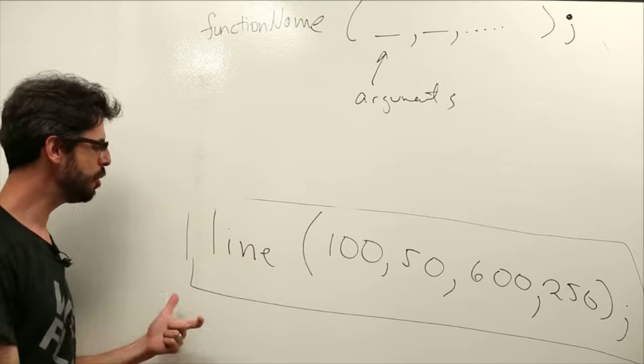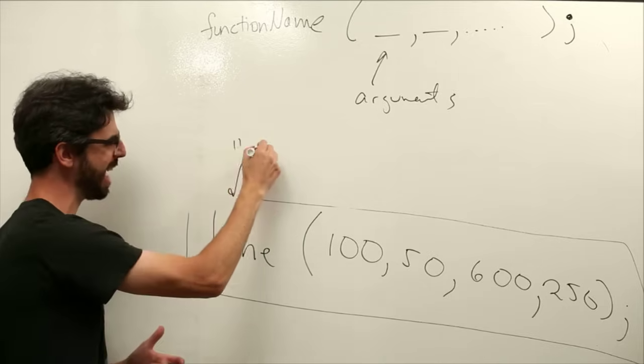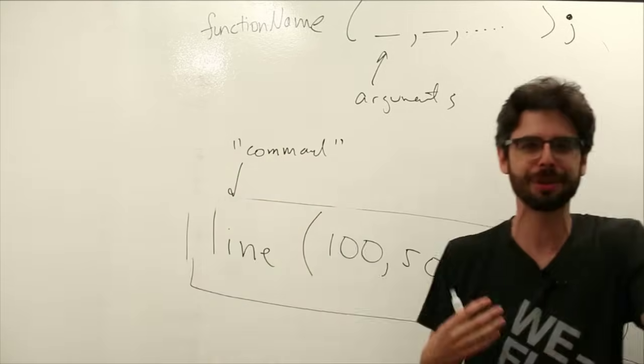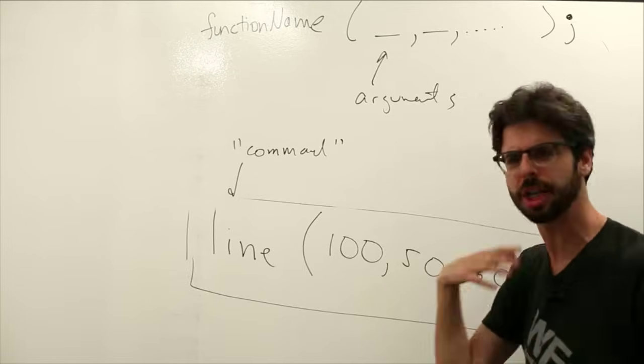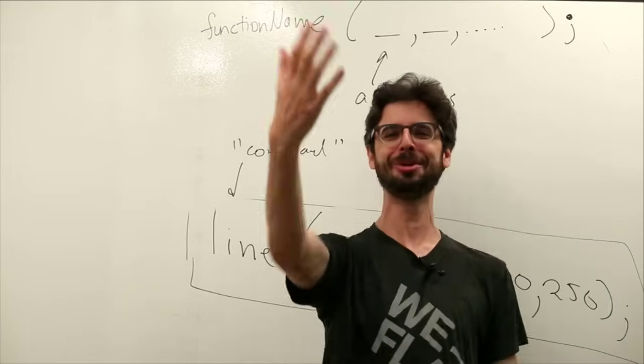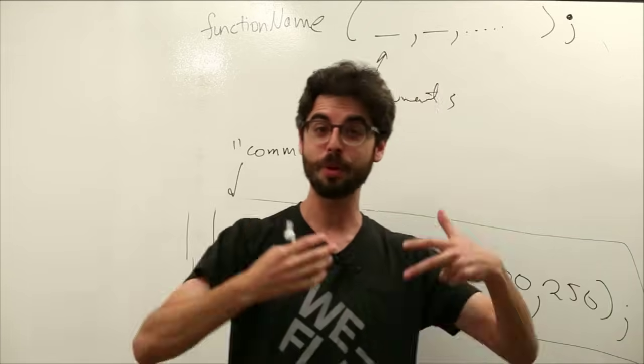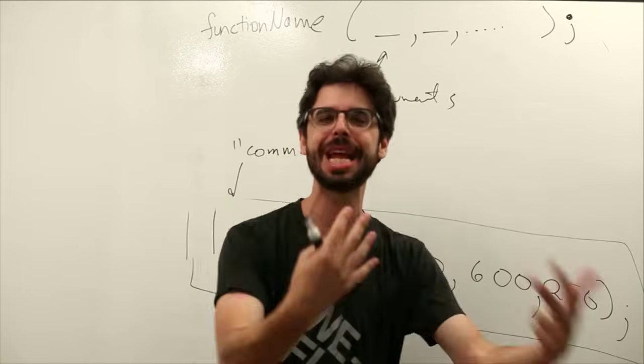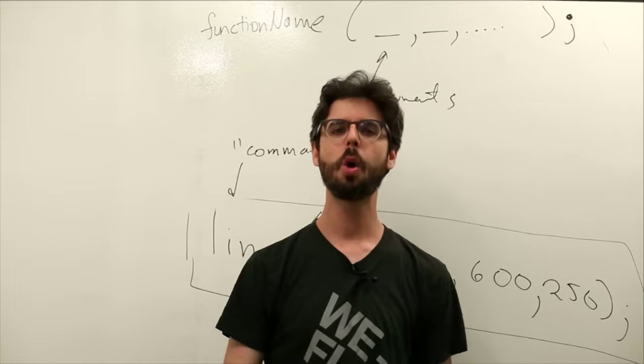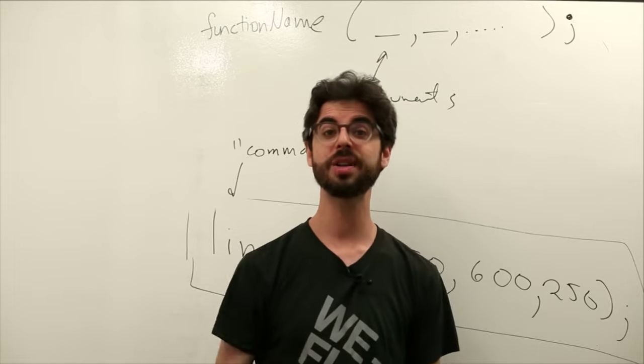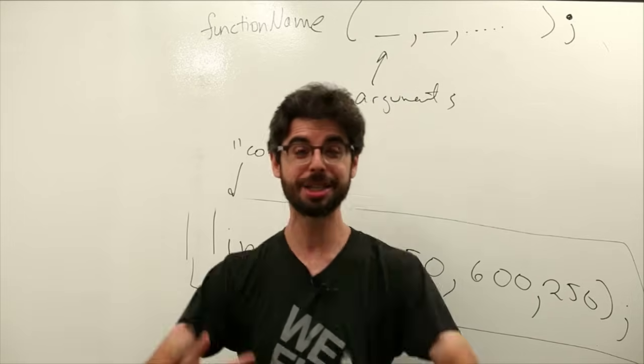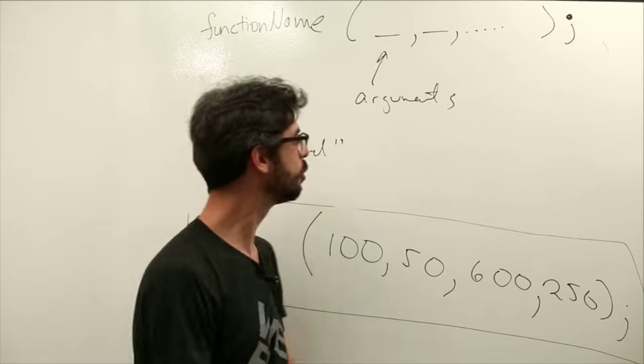What does this mean exactly? You can think of this as a command for now. Truly, it's a function or a method or a procedure. Function, I think, will be the word that we use continuously. Arguments are the parameters that define how we're going to execute that command. If I'm trying to program you, I could say walk, or I could say walk fast, or I could say walk to this location fast. Those are arguments to the command, the function walk.